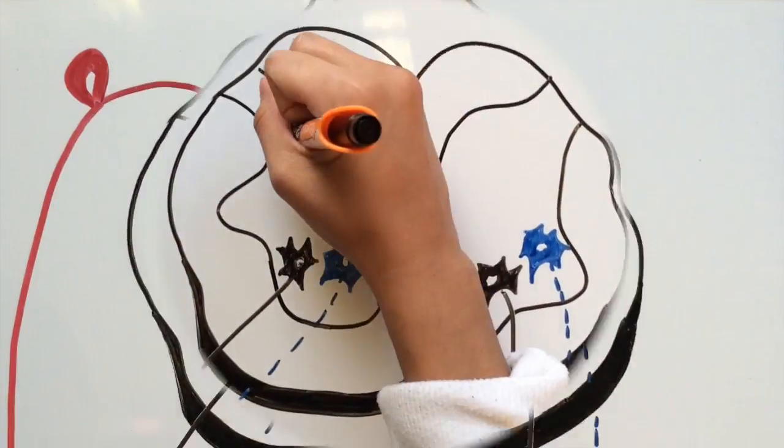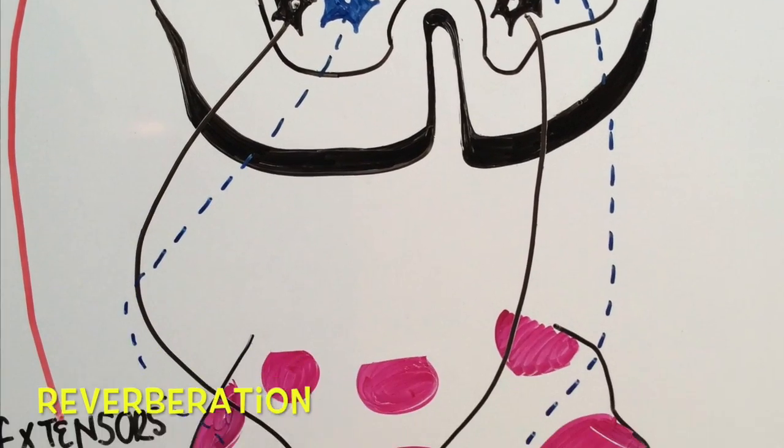During this process, reverberation will continue to function until synaptic fatigue occurs. Although it seems like an easy process, cross-extension reflex involves many steps.